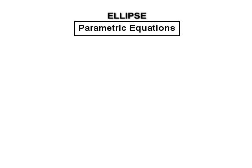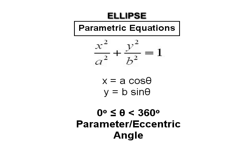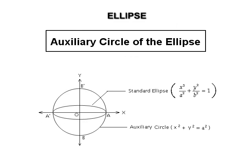Parametric equations of the ellipse x² upon a² plus y² upon b² equal to 1: the parametric equations are x equal to a cos θ and y equal to b sin θ, where 0 ≤ θ < 360° is called the parameter or eccentric angle. The parametric point P(θ) on the ellipse is P(a cos θ, b sin θ). We draw a circle with the major axis as diameter; its equation is x² plus y² equal to a², and it is called the auxiliary circle of the ellipse.